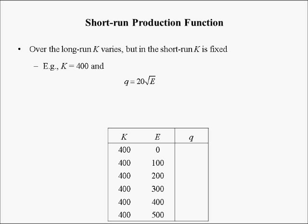The reason E is adjustable in the short run but capital is not — take McDonald's for example. If McDonald's is hammered during lunch, it can't build a new grill, expand its fryer, or expand the dining room. But it can call in people who aren't working that day to help with the lunch rush. So the more E, the higher the firm's short-run output, but that output increases at a decreasing rate.